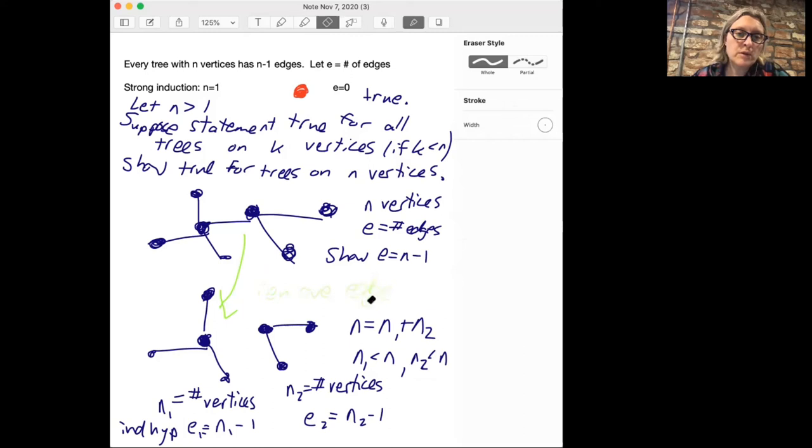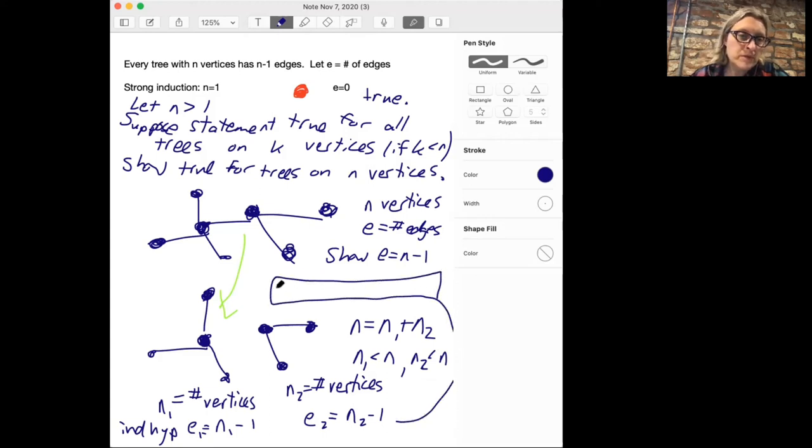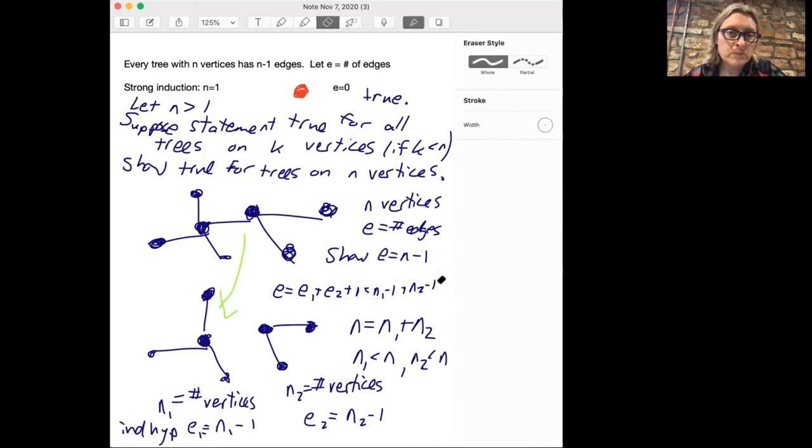Now I wish I had more space at the bottom here, but what we can say is that e is the number of edges in the left plus the number of edges in the right, that's e1 plus e2, plus the one edge that we removed. If you write that all out, that's n1 minus one plus n2 minus one plus an extra one. That simplifies as n1 plus n2 minus one, which is exactly n minus one.